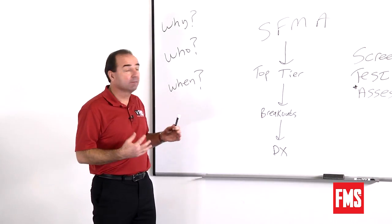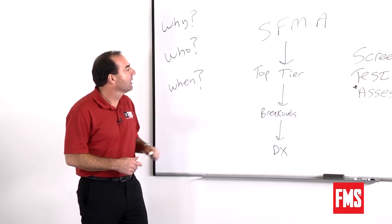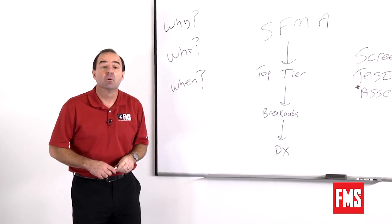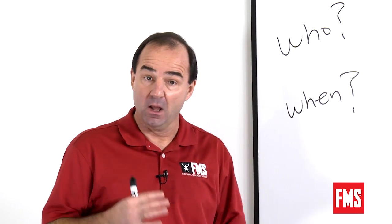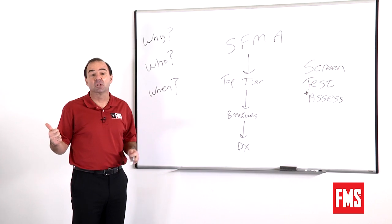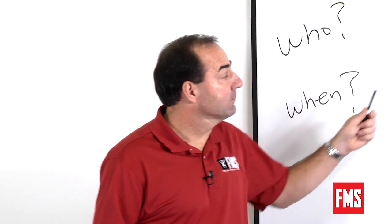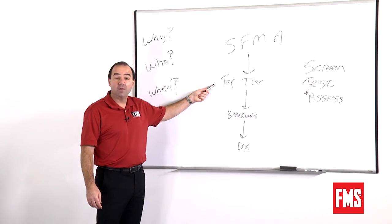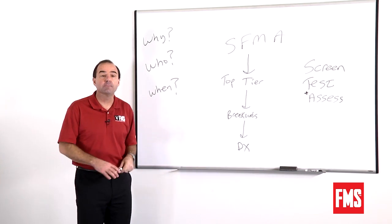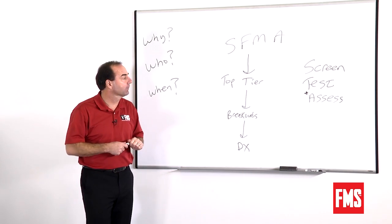So the SFMA involves a very structured process to get to the patient's movement diagnoses. First, we start with our top-tier movements. We're going to look at seven global movements, neck, arm, spine. We're going to cover those movements and score them in a very, very simple way. We're going to score these movements as either functional, meaning it meets the goal that we want, or dysfunctional, it doesn't, and then painful or not. So it can be scored then in four categories. Dysfunctional, functional, painful, non-painful.